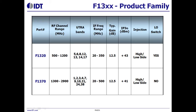IDT offers two versions. IDT-F3020 covers 500 to 1200 MHz RF band, 20 to 350 MHz IF frequency, with a typical gain of 12.5 dB, IP3 of 43 dBm. Both high-side and low-side injection are available, and an integrated error switch is supported. IDT-F3070 covers 1300 to 2900 MHz RF band; the integrated error switch is not supported on this version.